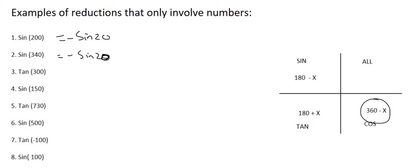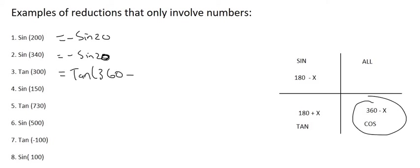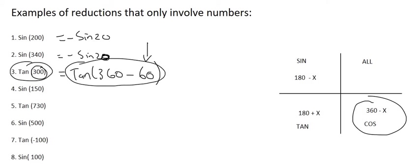Number 3 is tan 300. The 300 degrees falls into the fourth quadrant, so we rewrite it as 360 minus 60. Many people want to put a 300 in place of the 60, but remember, the expression 360 minus 60 must equal 300 — we're just rewriting it to match the CAST diagram. The 60 would usually have been an x, so now we say tan 60. Because tan is negative in that quadrant, the answer is negative tan 60.